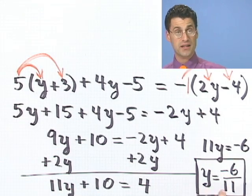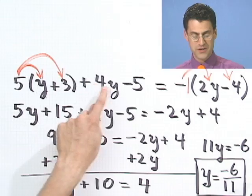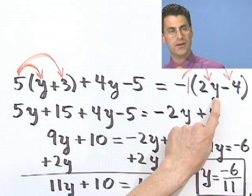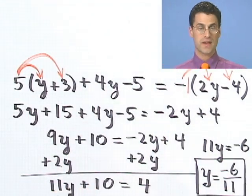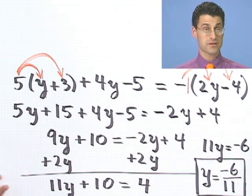And again, you might want to go back and take minus 6 over 11 and plug it in for each value of y here and each value of y there and make sure that this number equals that number. And you can check that and see that this answer is correct. So that's all there is to solving these things.